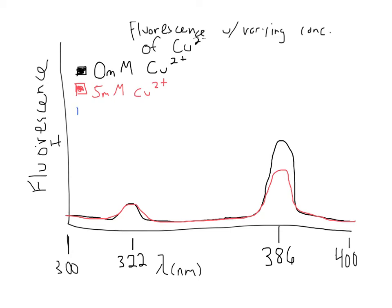Logically, the next step is if you add more copper, then it's going to quench that signal even more. So you'll see pretty much the same spectrum from the beginning, until you get down to that acceptor wavelength, where you'll see a much smaller signal at 386 nanometers because of the quenching from the copper.